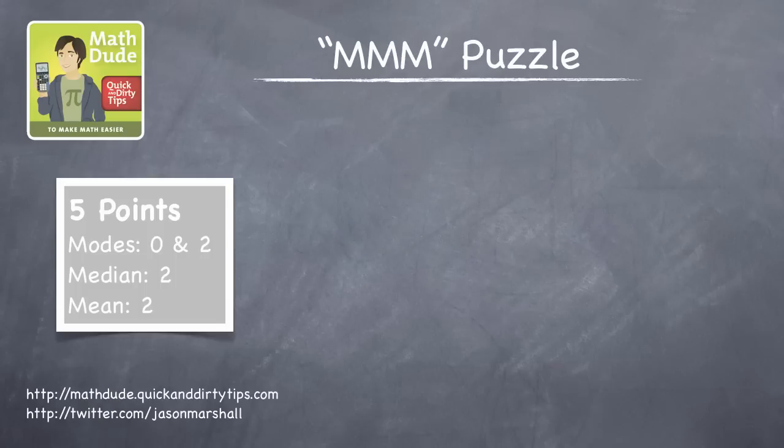Okay, we're now ready to solve the puzzle. We need five numbers, and this group of numbers has to have certain properties. Namely, there must be two modes, 0 and 2. Let's start there.